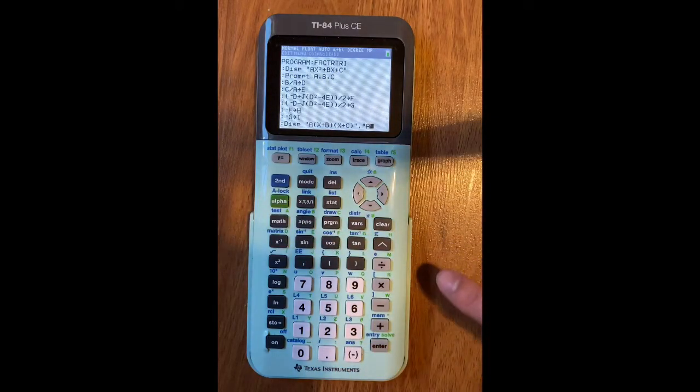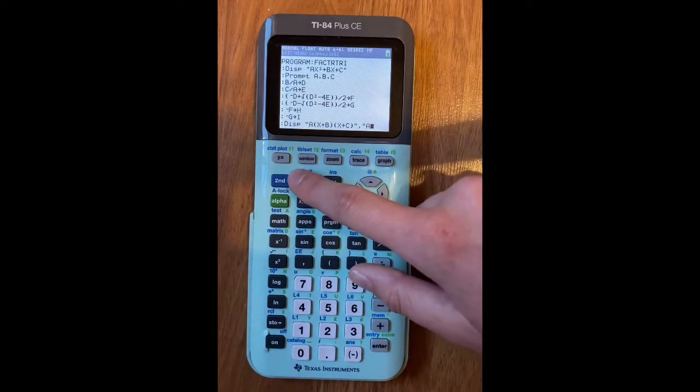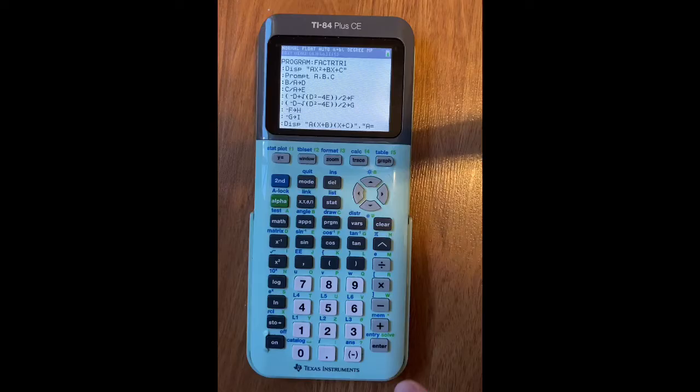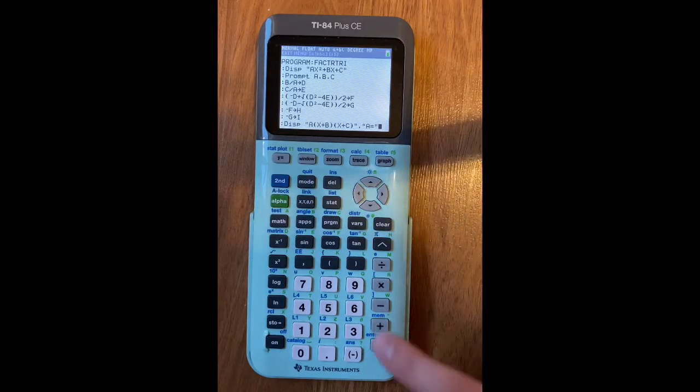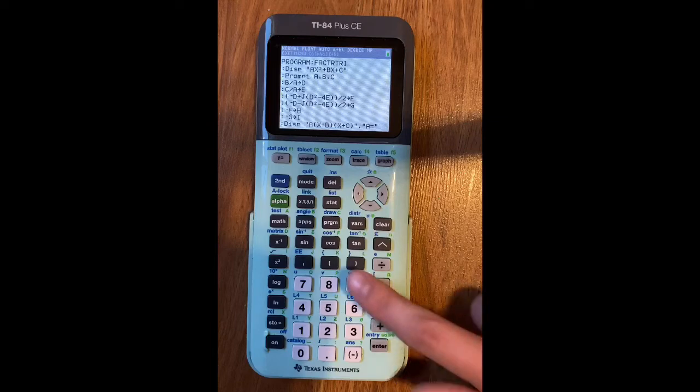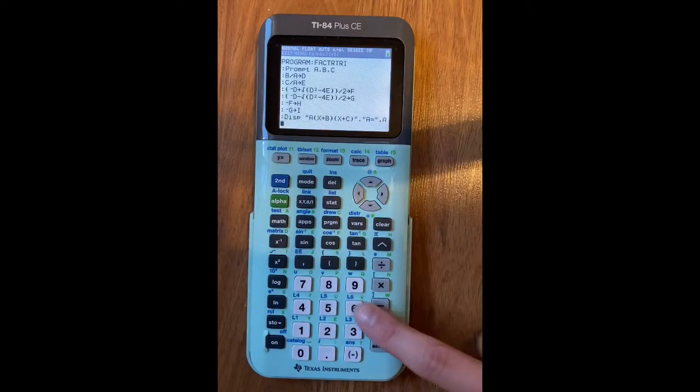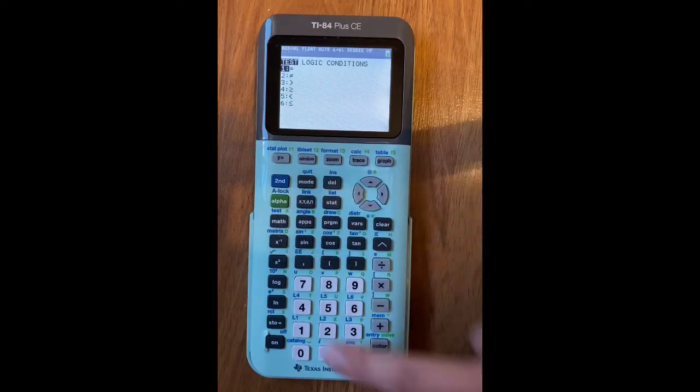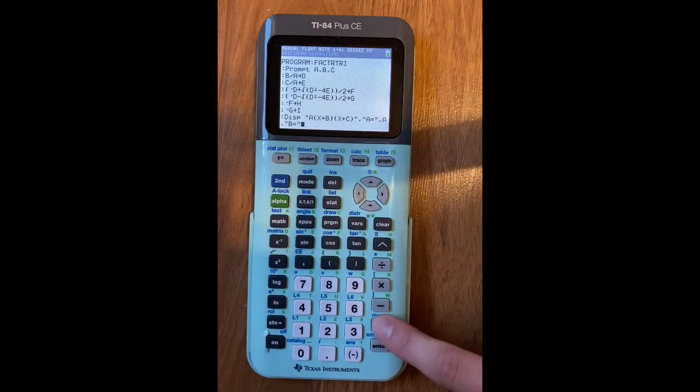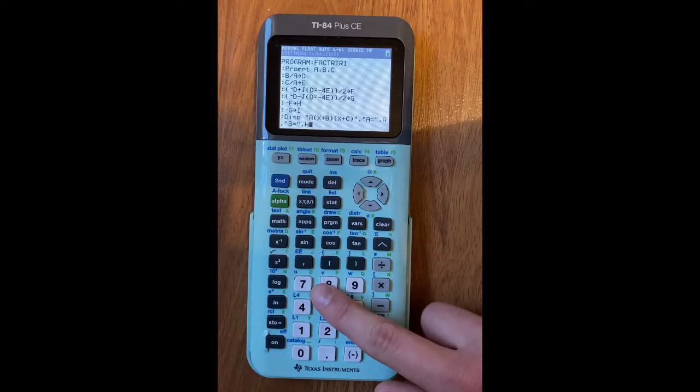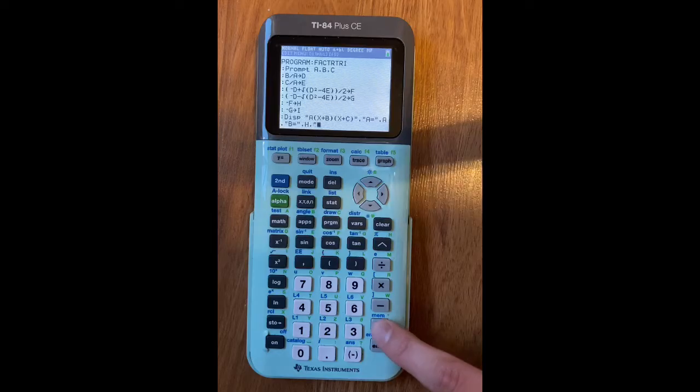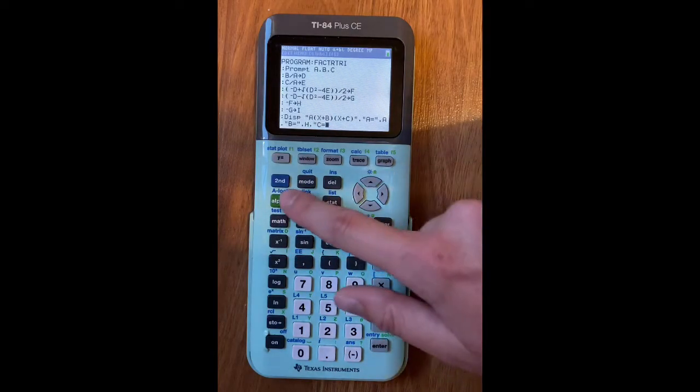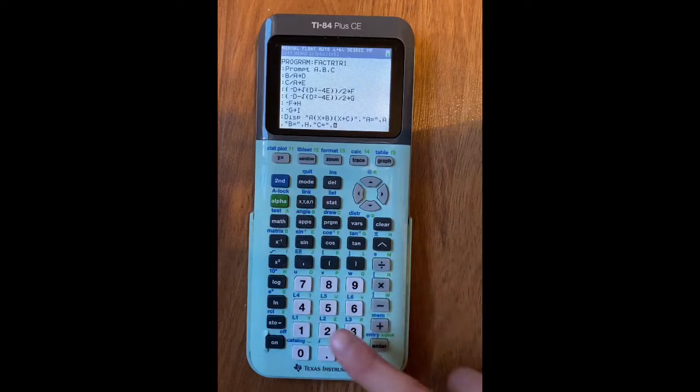Then you will do A. The next thing we're going to do an equal sign, which you do second, and press math for test, and then press equals, and then you're going to close it out with another quotation marks, comma, A, comma, quotations, B. And then you're going to do that equal sign again, quotations, comma, H, comma, quotations, C, and then another equal sign, quotations, comma, I.